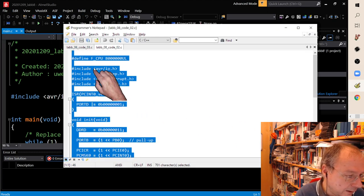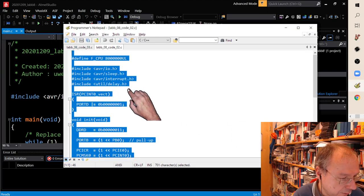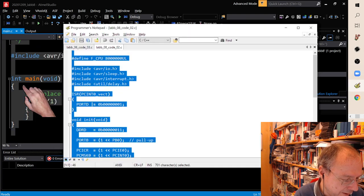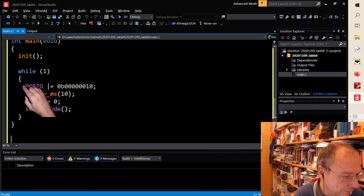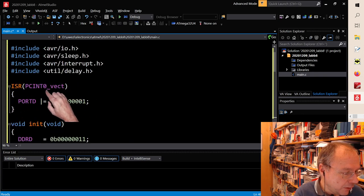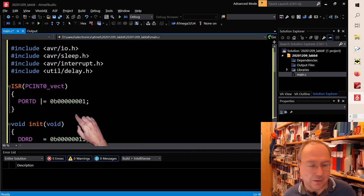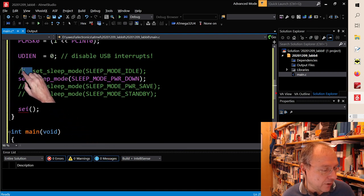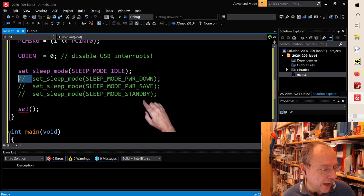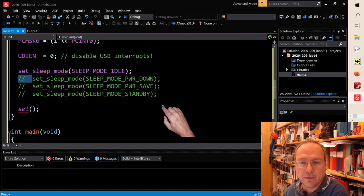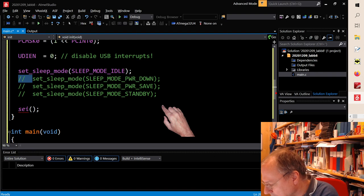I take our lab code number two, which uses the pin change interrupt to actually interrupt the sleep mode and go back to normal operation. Let's start by actually setting this to the idle mode and I will try to write down the current values here. Idle.